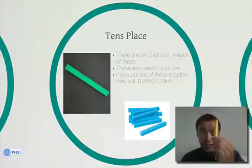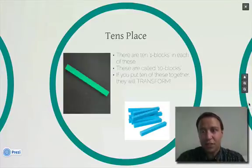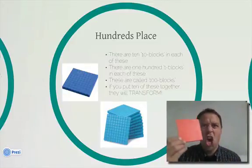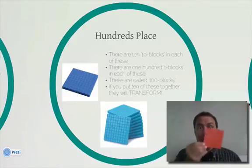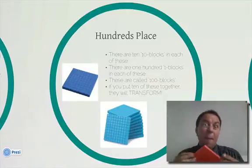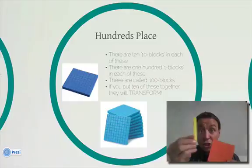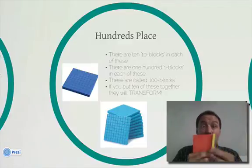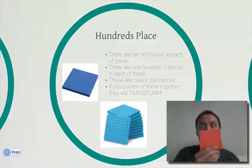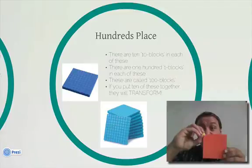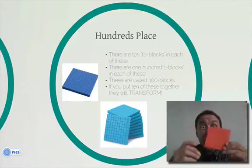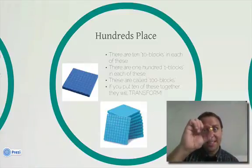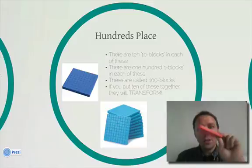Once you get 10 of them together, they transform into something else. If you have 10 blocks, you have a 100 block. Look at this thing — it's big, it's flat. If you have a math teacher that's not me, they might call this a flat. There are 1, 2, 3, 4, 5, 6, 7, 8, 9, 10 blocks in a 100 block. And there's a hundred of these little one blocks in this 100 block. So we have our ones place, our tens place, and our hundreds place.